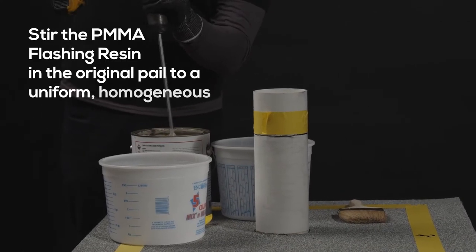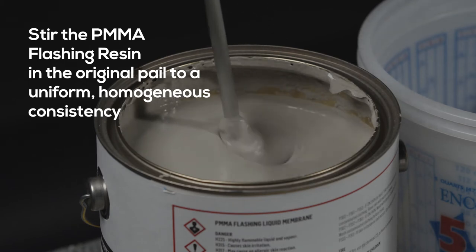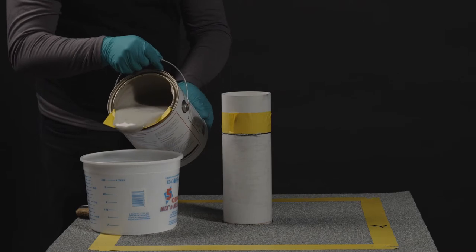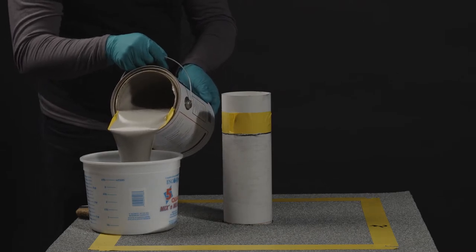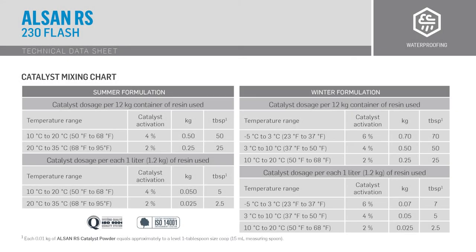Thoroughly mix the entire container of resin for 2 to 3 minutes prior to pouring it off into a secondary container used for measuring and mixing. Pour off only the amount of material that can be used within 10 to 15 minutes. The required amount of catalyst is based on the temperature referred to the PMMA catalyst chart for proper ratio.